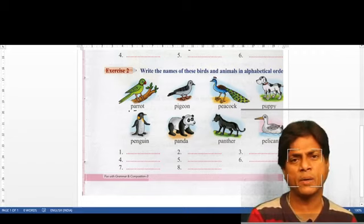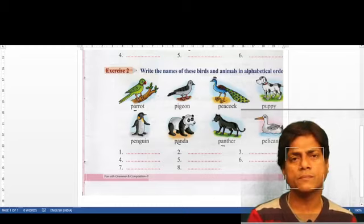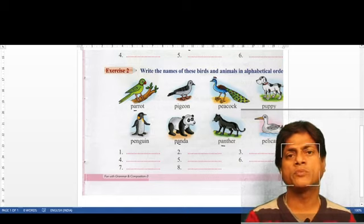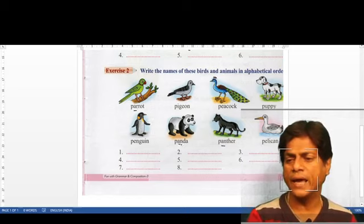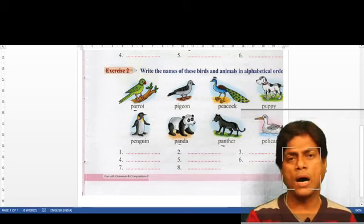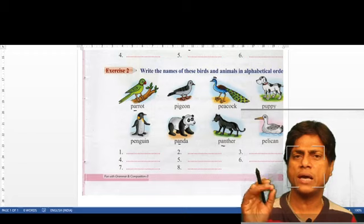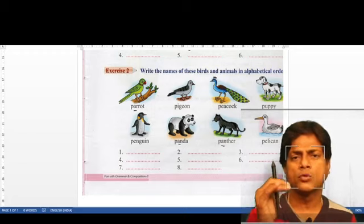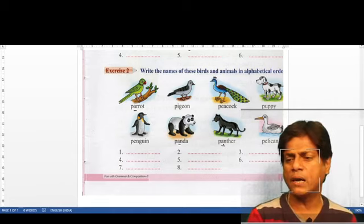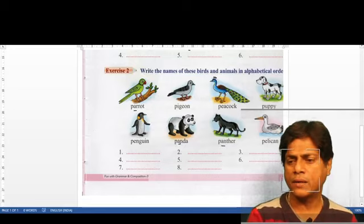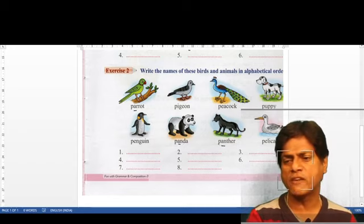A comes first in alphabetical order, but the problem is panther also has A, panda also has A. So now which one comes first? Now we go to the third alphabet. This one has R, this one has N, this one has N. Between R and N, which comes first? A, B, C, D, E, F, G, H, I, J, K, L, M, N - so N comes before R. So parrot will come later, and panda or panther will come first.